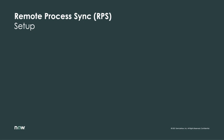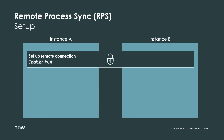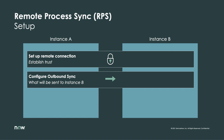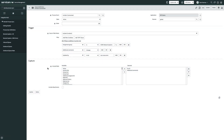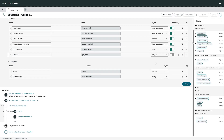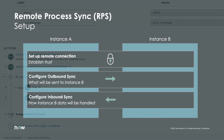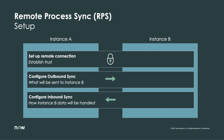Setting up Remote Process Sync is straightforward, involving three primary activities performed on each instance. First, the remote connection will be configured, establishing trust between the two instances. Next, we configure the outbound sync — this is done by choosing the table, fields, and conditions that must be met before data is sent. That captured data can then be handled by a subflow in Flow Designer, allowing for precise, configurable conditional logic. Finally, we close the loop by configuring inbound sync logic, again accomplished using flows that enable flexible data transformation and mapping.